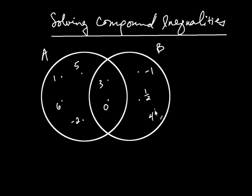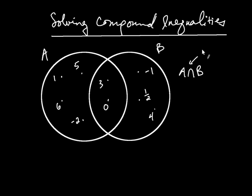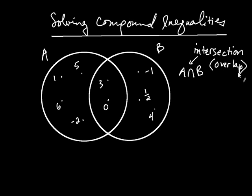The numbers are associated with a little point right here. We have a way of combining these two sets in special ways to give new sets. The first way is called intersection, denoted A intersect B. Intersection basically means overlap — it's the numbers belonging to both sets.